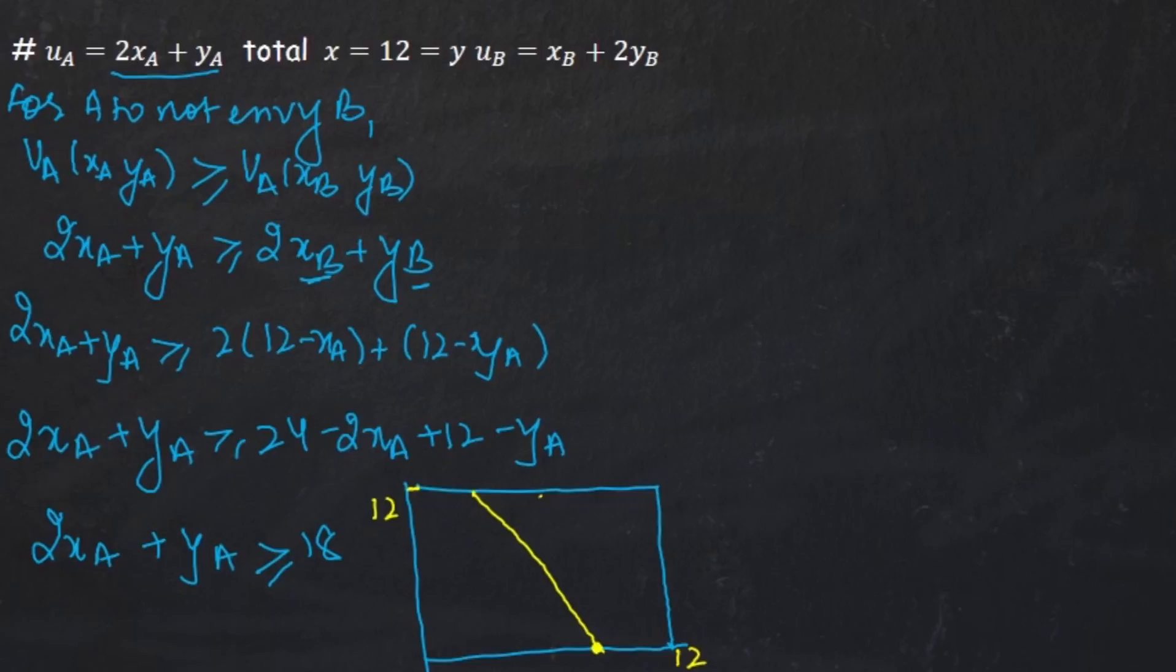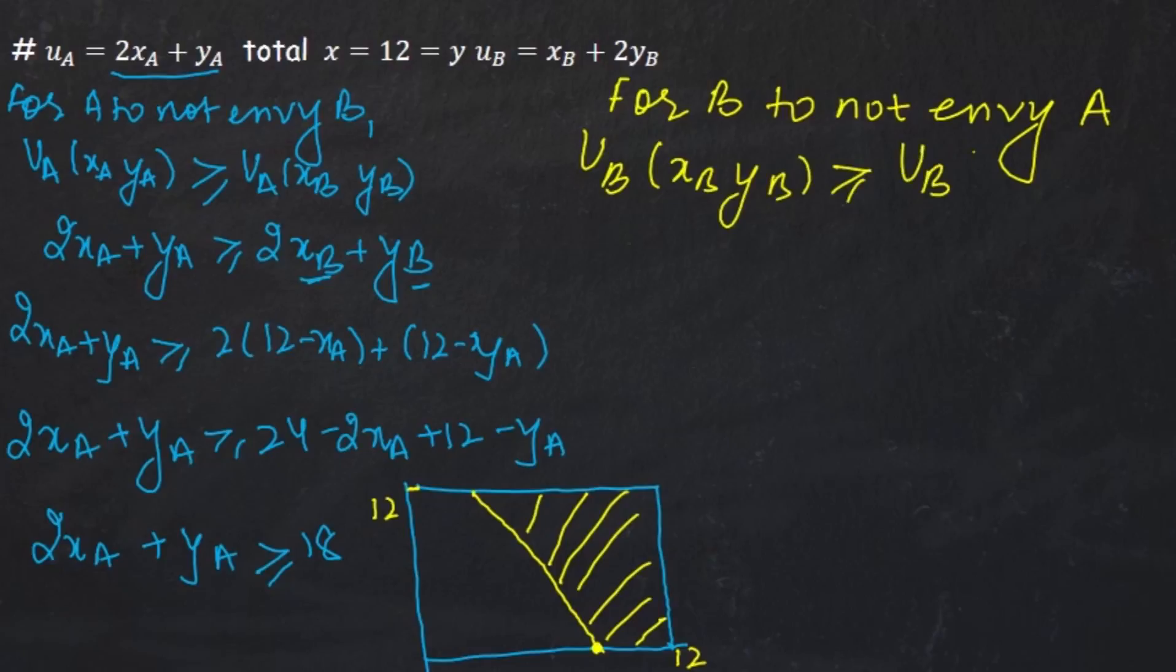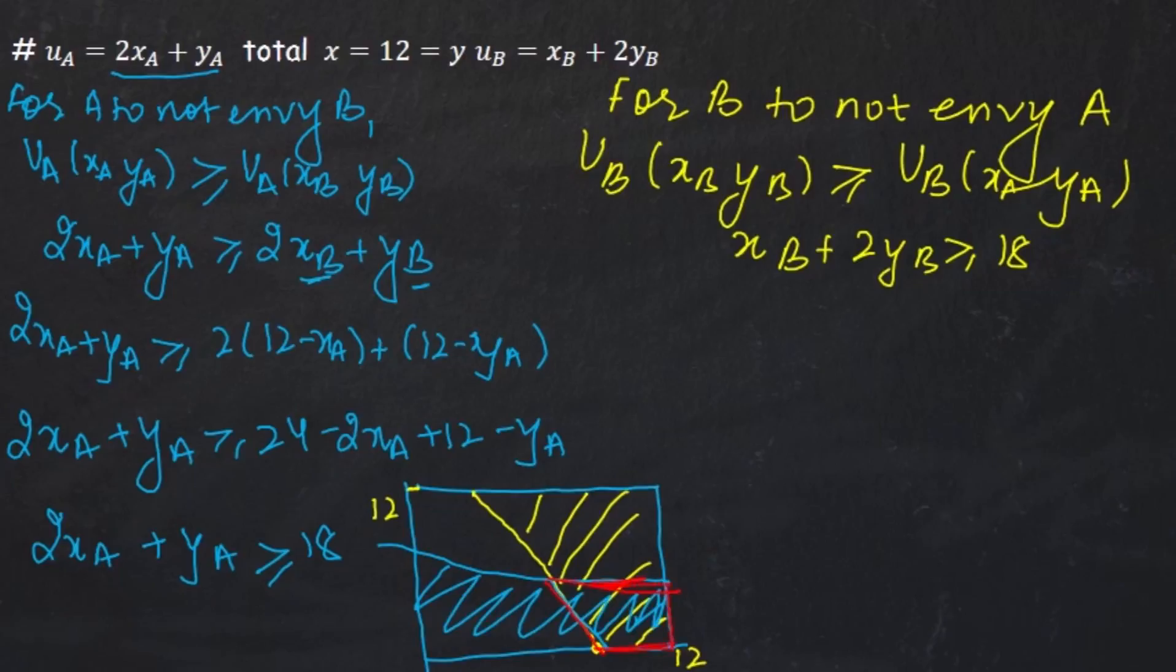Now we do the same exercise but we say that for B to not envy A. B will not envy A if B's utility from his own bundle is greater than equal to B's utility from A's bundle. When you solve this you get the equation to be xB plus 2yB is greater than equal to 18. When you plot it, it comes out to be like this. And this is the shaded area of B. You get this area which is the area of mutual no envy. Now all I have to do is figure out the Pareto efficiency, collate the two areas and I'm done.